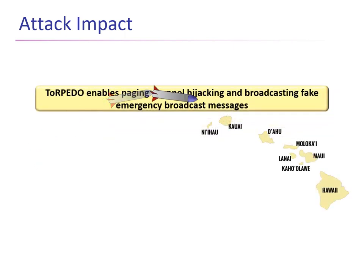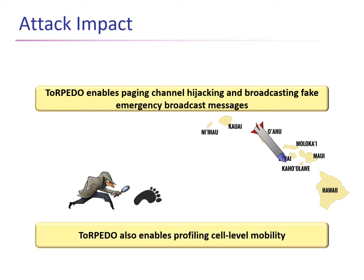Once the paging occasion of a certain victim is revealed, the torpedo attack also enables targeted paging channel hijacking attacks and broadcasting fake emergency messages to that victim. In addition, torpedo enables profiling cell-level mobility — basically tracking the movement of a particular cellular device through various areas.